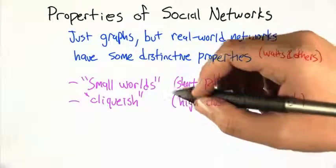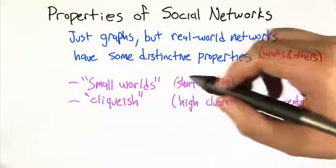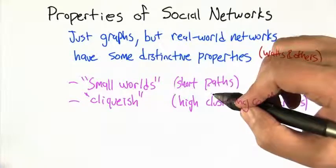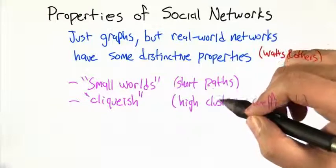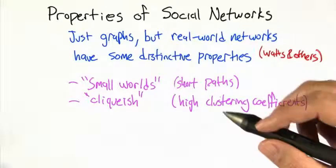One property of these graphs is that they tend to exhibit the small world phenomenon, which essentially means that there's short paths between arbitrary nodes in the graph. Another is that they're cliquish, which means they exhibit a high clustering coefficient. I'm going to illustrate these two properties next.